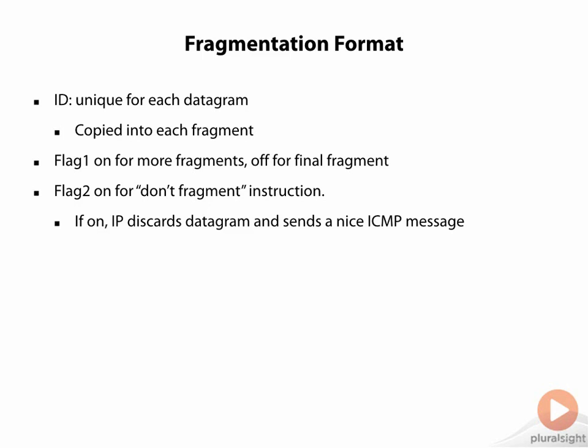If that's the case, this attacker can note there's a layer three hop, write it down, and then change the size of the packet — make it a little smaller — and put the DF bit on again. He is able to get an ICMP message from devices in the network that would normally be stealth. And so that can be used as an attack vector.